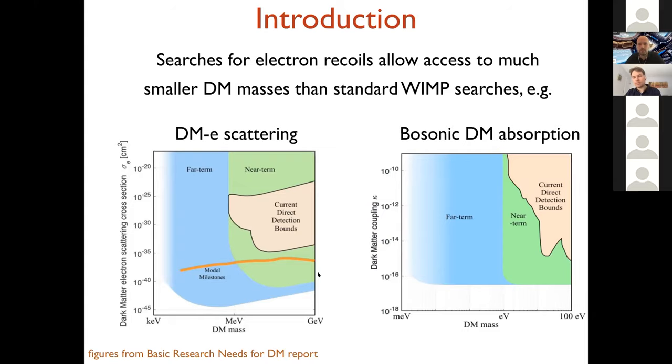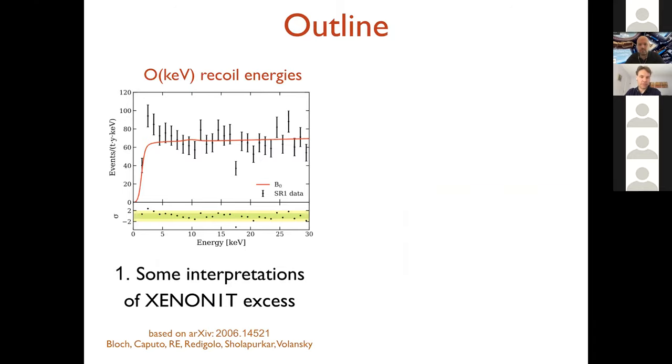So I've taken these two plots from the Department of Energy in the U.S. basic research needs report for dark matter. On the left, you see a plot for dark matter electron scattering. This is the dark matter electron scattering cross-section on the Y-axis and the dark matter mass on the X-axis. There's some current bounds which already go down to 500 kV, and I'll talk about this a little bit more later today.